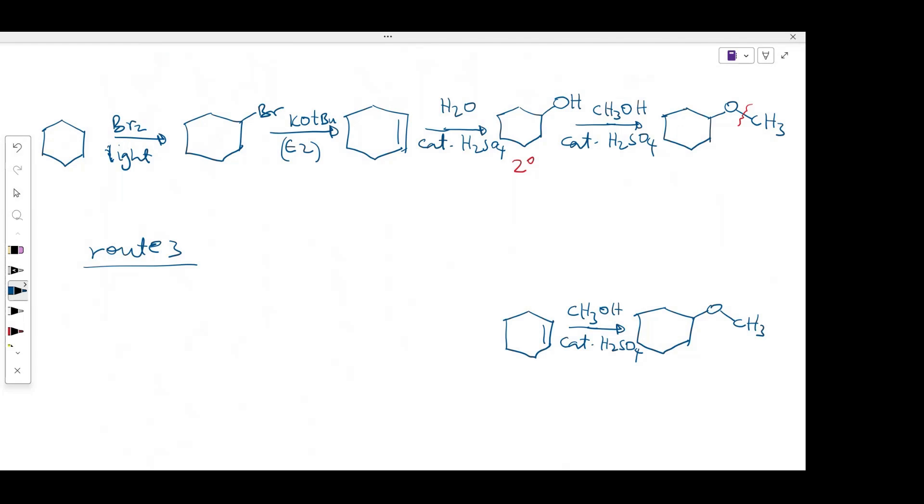In order to make the alkene, I will have to react an alkyl halide with a base, a strong base. I can use potassium tert-butoxide. And to make the alkyl halide, all I have to do is to react my alkane with bromine and light. So all of these strategies will give us the same product.